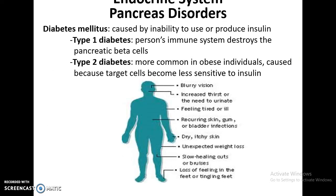Diabetes mellitus is caused by an inability to use or produce insulin. Type 1 diabetes: a person's immune system destroys the beta cells, so they do not produce insulin. Type 2 diabetes is more common — target cells that normally uptake glucose become less sensitive to insulin, so you have to produce more and more insulin to get glucose taken up by these cells, and eventually the pancreas cannot produce enough insulin.